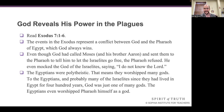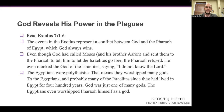The events in the Exodus represent a conflict between God and the Pharaoh of Egypt, which God wins soundly at every score. Even though God had called Moses and his brother Aaron and sent them to the Pharaoh to tell him to let the Israelites go free, the Pharaoh refused. He even mocked the God of the Israelites, saying, 'I do not know the Lord.' The Egyptians were polytheistic — they believed in many gods. They worshipped many gods.